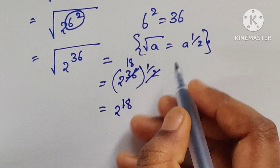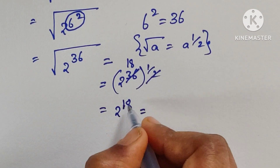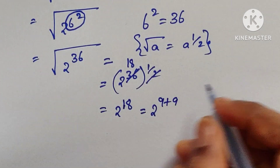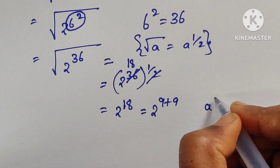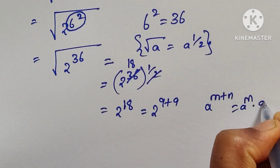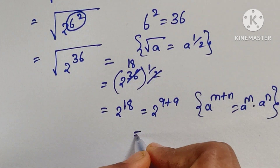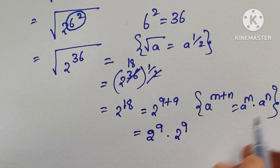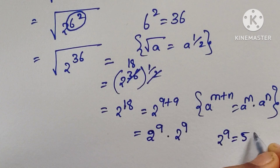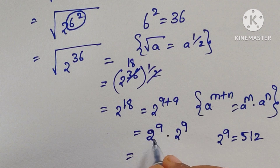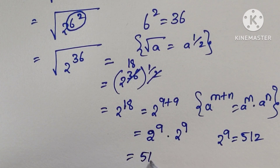Now cancel out: 2 times 18 equals 36, so we get 2 to the power of 18. We can write 2 to the power of 18 as 2 to the power of 9 plus 9, which equals 2 to the power of 9 times 2 to the power of 9. We know that 2 to the power of 9 equals 512.